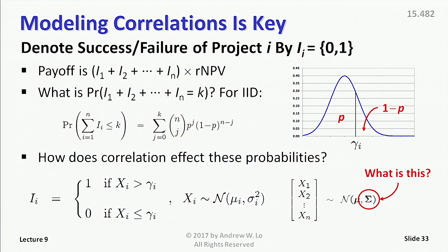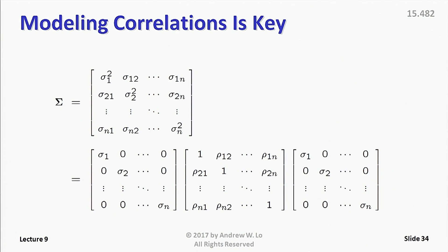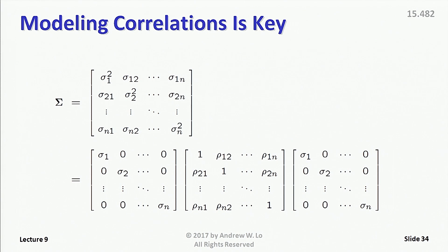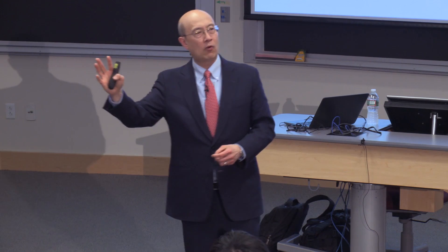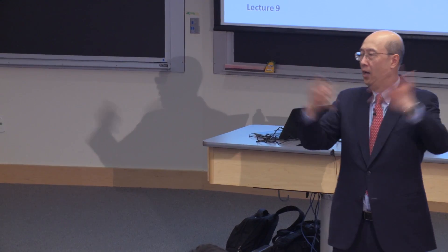So what is sigma? It's the covariance matrix you know and love from standard portfolio theory, except in this case it has to do with drug development project outcomes, not rates of return. We have variances along the diagonals and covariances along the off-diagonals. It's often easier to think about correlations: you pre- and post-multiply by the standard deviations, and in the middle is the correlation matrix. Correlations are a number between minus 1 and 1 — 1 is perfect correlation, minus 1 is perfect anticorrelation, and 0 means completely unrelated.